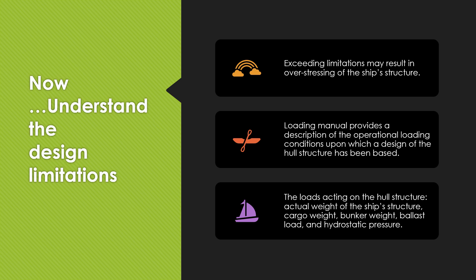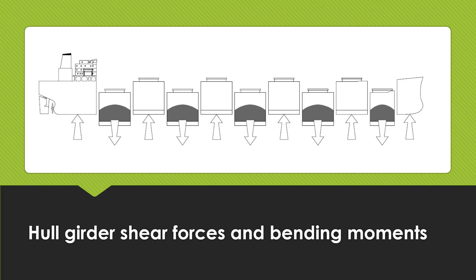The ship structure is designed to withstand the static and dynamic loads likely to be experienced throughout its service life. The loads acting on the hull structure when a ship is floating in still or calm water are static loads. These are imposed by the actual weight of the ship structure, outfitting equipment, machinery weights, cargo weights, bunker and other consumable loads, ballast water weight, and the hydrostatic pressure exerted by the sea water all around the ship's hull.